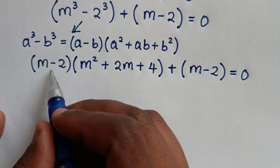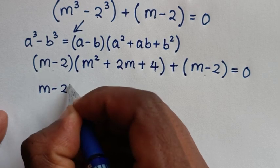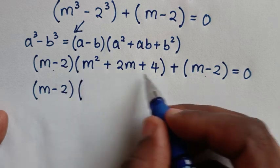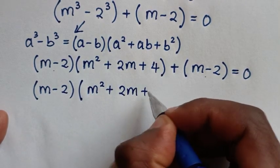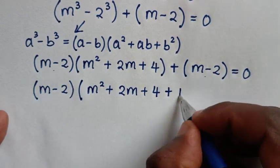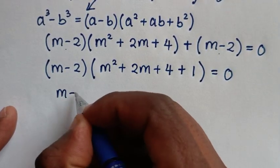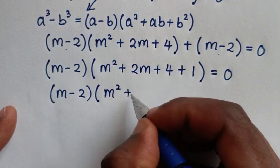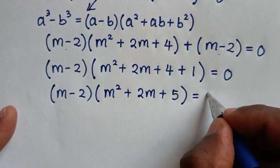In the next step, (m - 2) is common, so we factor it out. Dividing by (m - 2) gives m² + 2m + 4, then plus the remaining (m - 2) term, combining to give (m - 2)(m² + 2m + 5) = 0.